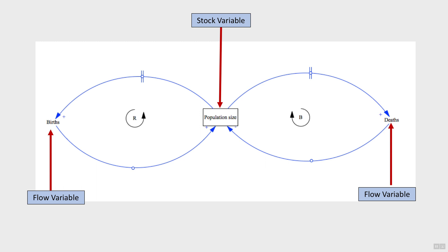Link polarities represent the causal influence between variables. If the cause and effect variables move in the same direction, such as the effect of births on population size, then it's a positive link, denoted with a plus sign. But if the cause and effect variables move in the opposite direction, such as the effect of deaths on population size, then it's a negative relationship, denoted with a minus sign.